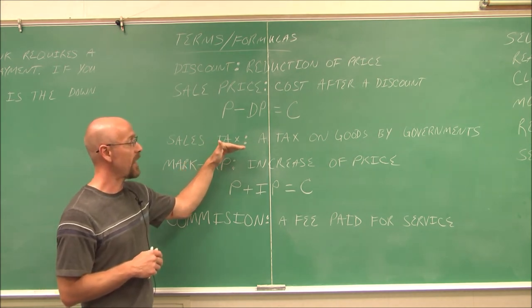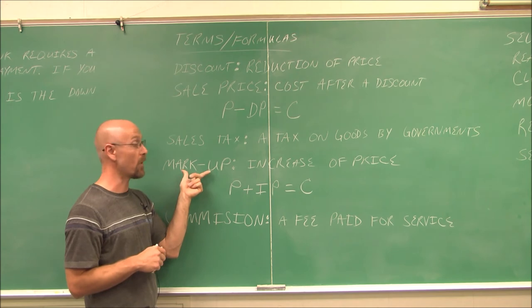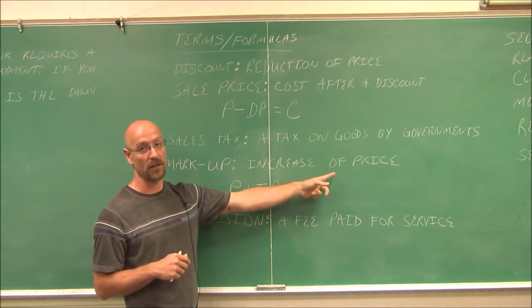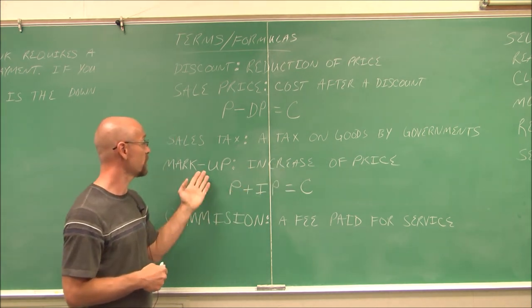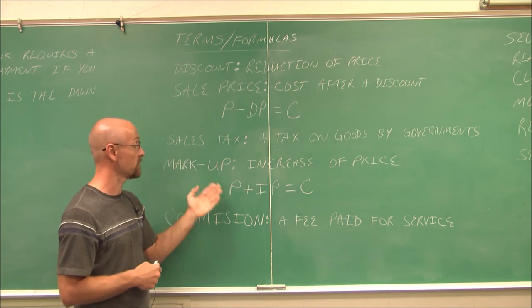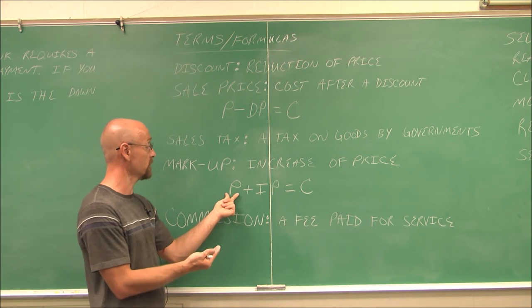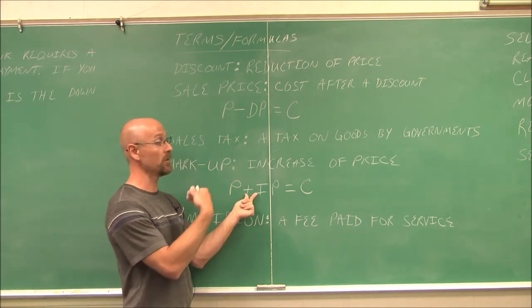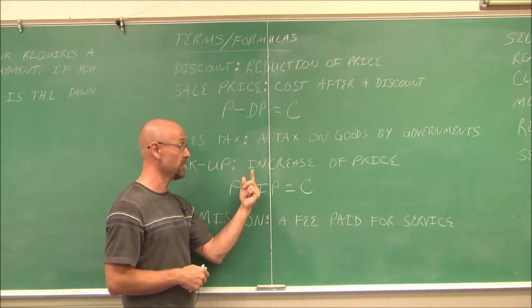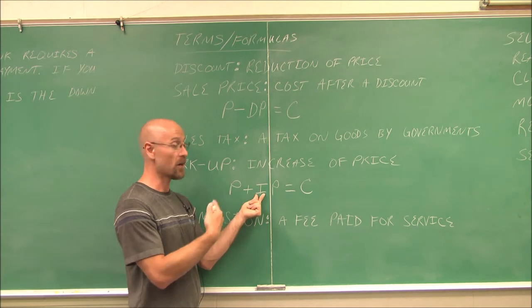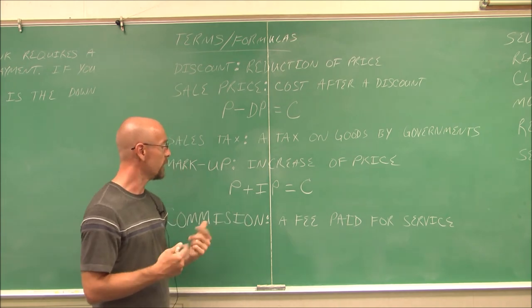When we have to pay a tax, that is an additional cost. So I also decided to define markup. Markup is an increase of price. A tax increases the cost that you have to pay. So it is an increase of price. Whether you're calculating a markup or sales tax, you can actually use the same formula, where we have an initial price and we're going to pay a tax or we're going to pay a markup. The I indicates the increase, which is our rate, our percent, times that price. And if we add the two together, we'll have the cost, what I have to pay out.